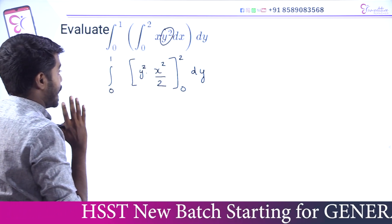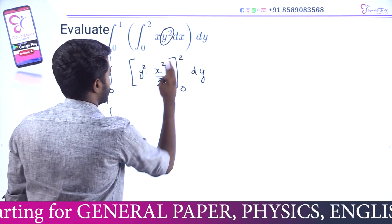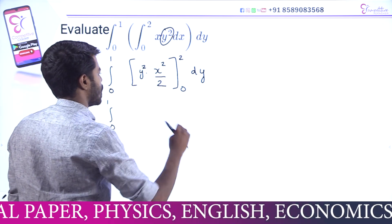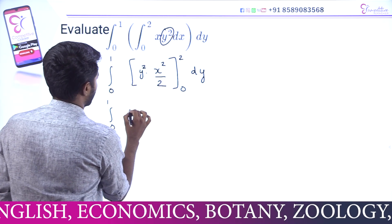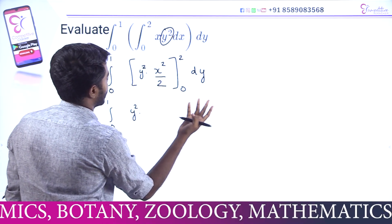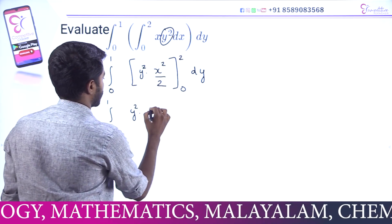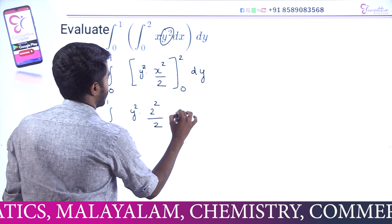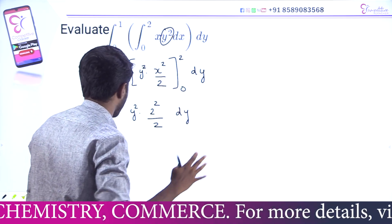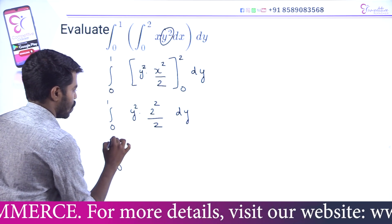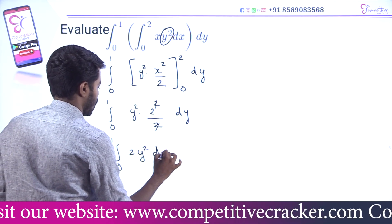That is integral 0 to 1. We apply the upper limit to the lower limit. If the lower limit is 0, we proceed. That gives y². We apply x — upper limit 2 squared by 2, giving 2y² dy.